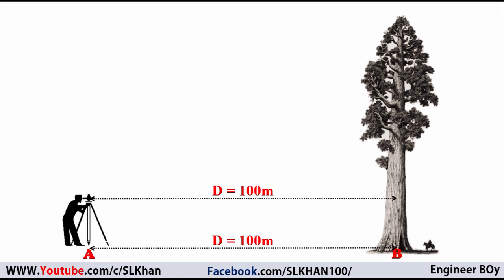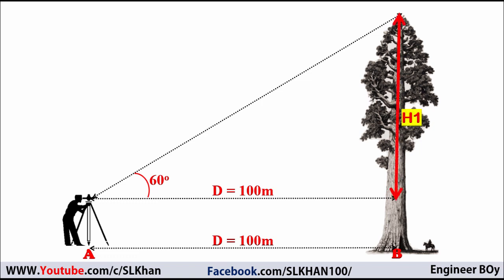After measuring the distance between point A and point B, we sight the top of the tree and note the vertical angle — let's say we get 60 degrees. The height of the tree is the summation of h1 plus a small portion h2, which I'll discuss shortly. As you can see, we have a right angle triangle here.